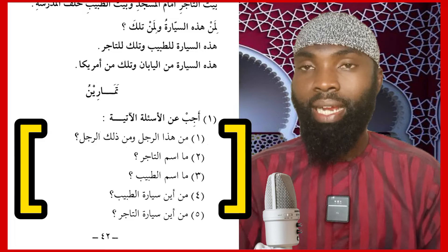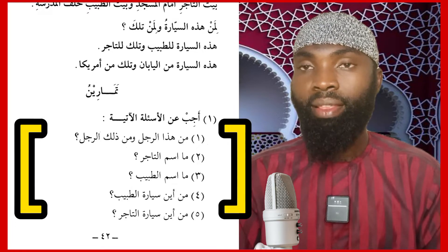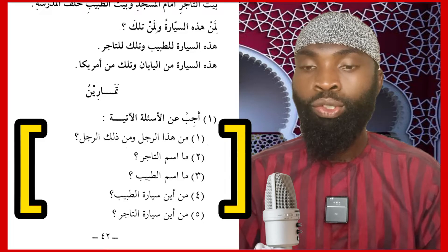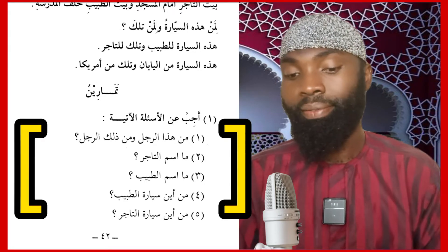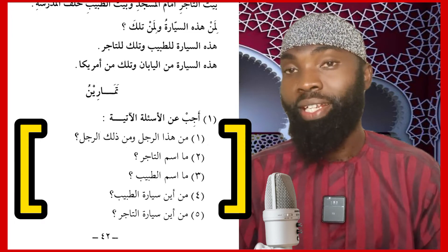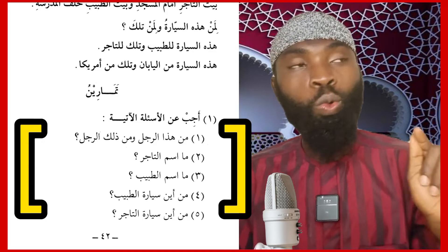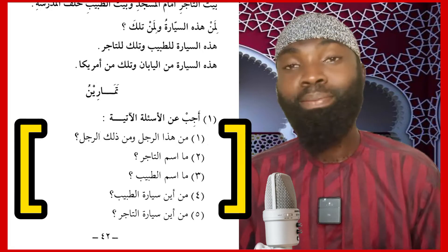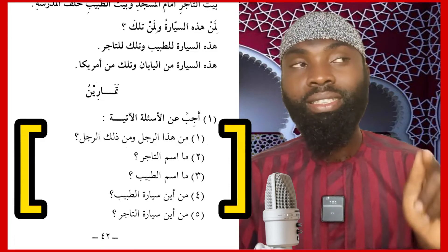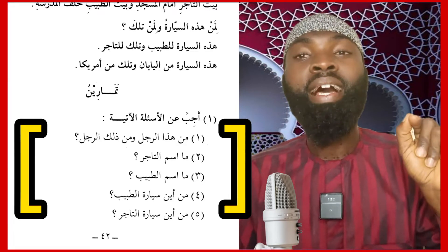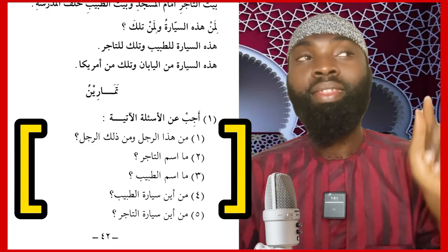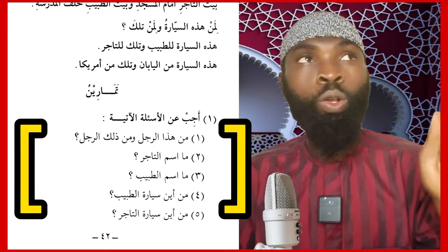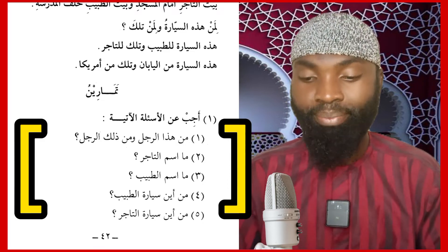Exercise 1: Answer the following questions. Number One — who is this man and who is that man? From the passage we know this man is the trader and that man is the doctor. So we say: Hadha ar-rajulu tajirun — this man is a trader. Dhalika ar-rajulu tabibun — that man is a doctor. Number Two — what is the trader's name? The trader's name is Mahmud. The doctor's name is Ahmed.